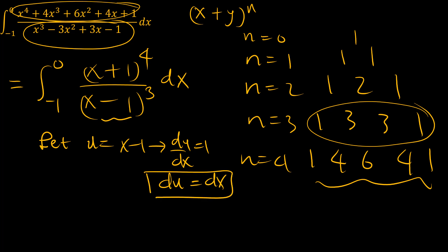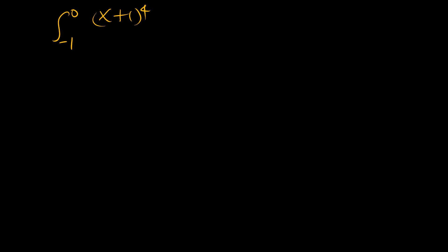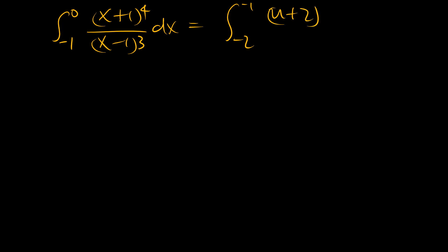Now the important part: we need to look at the limits. When x equals negative 1, u becomes negative 2. When x equals 0, u becomes negative 1. So our integral now becomes, in the u domain, the integral from u equals negative 2 to negative 1 of u plus 2 to the power 4, over u cubed, du.